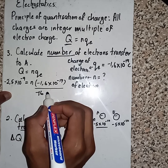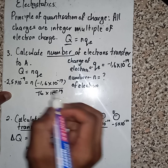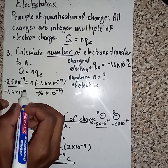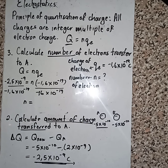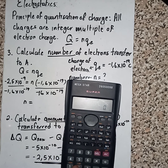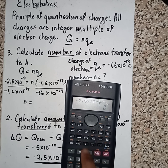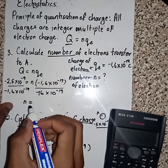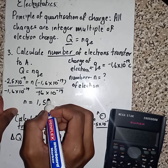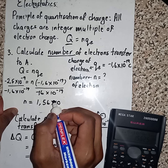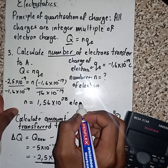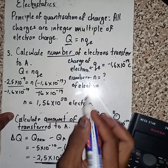To find N, we divide throughout by 1.6 times 10 to the power of minus 19. We are going to get N approximately equal to 5.6 times 10 to the power of 28 electrons.